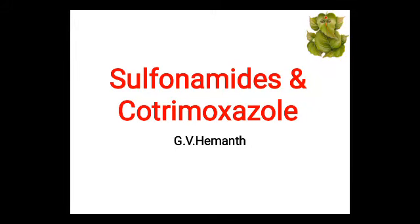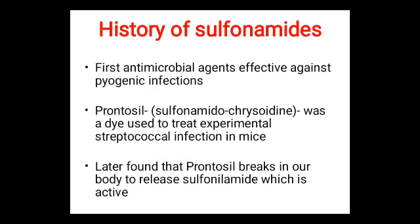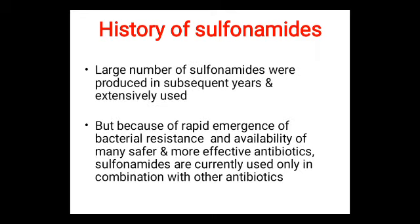Sulfonamide and cotrimoxazole are the first antimicrobial agents effective against pyogenic infections. Prontosil was a dye used to treat experimental streptococcal infection in mice. It was later found that prontosil breaks down in the body to release sulfonamide, the active compound. A large number of sulfonamides were produced and extensively used, but due to rapid emergence of bacterial resistance and availability of safer, more effective antibiotics, sulfonamides are currently used only in combination with other antibiotics.